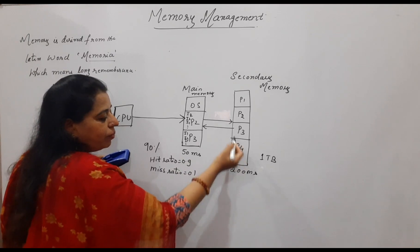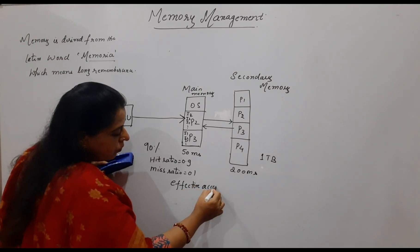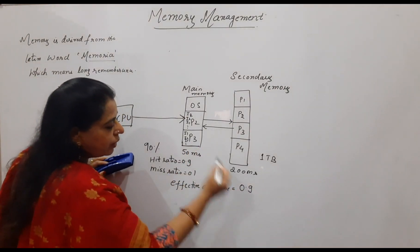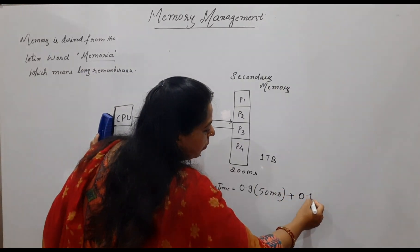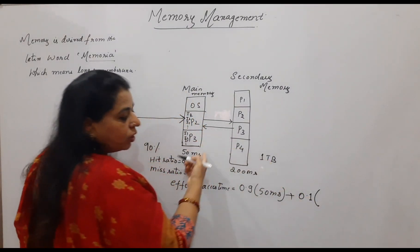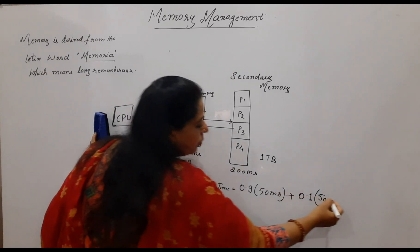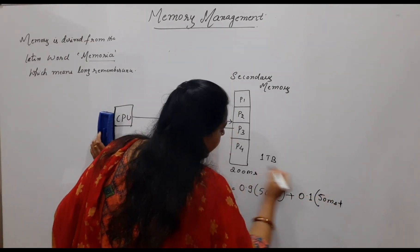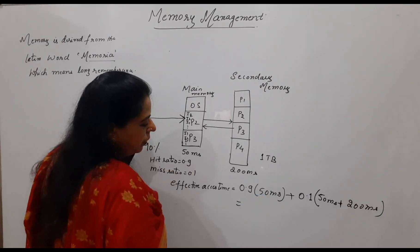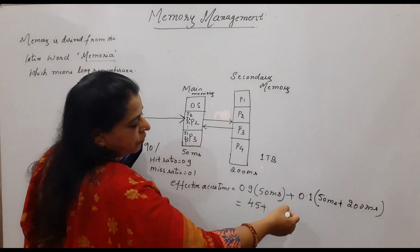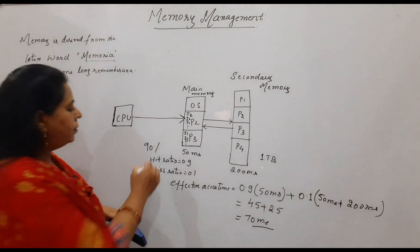Access time for the main memory is 50 milliseconds; access time for the secondary memory is 200 milliseconds. To calculate the effective access time: effective access time = 0.9 × 50 + 0.1 × (50 + 200) = 45 + 25 = 70 milliseconds. So 70 milliseconds is the effective access time for this example.